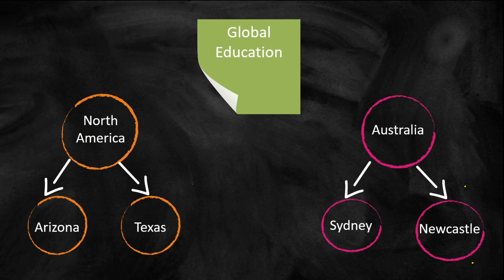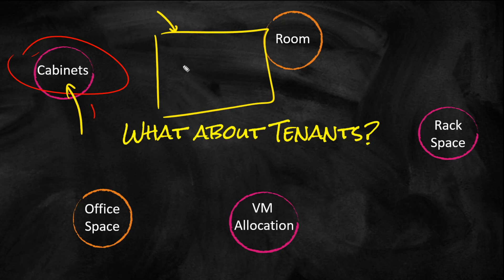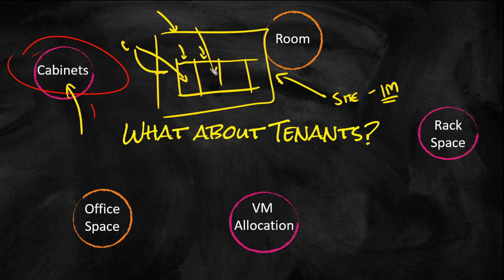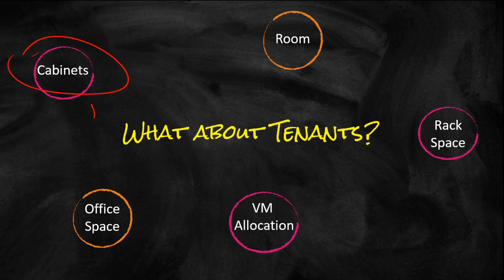You might use tenants to organize your cabinets. Let's say we've got a big data center. Within this data center we have multiple cabinets, and we do co-location where customer one buys one cabinet and customer two buys another. We have a data center here in Arizona called Iron Mountain Data Center. Iron Mountain might be the site, and then within it you divide up that site with tenants, assigning each tenant a cabinet.